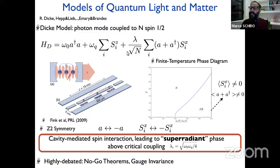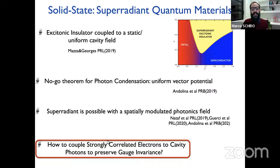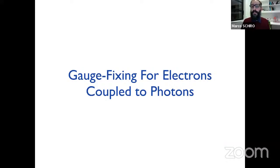Similar efforts to embed electronic degrees of freedom in a cavity to mediate super-radiance in quantum materials have created a lot of interest. It is now understood that for this to happen one needs modulation in the vector potential. Nevertheless, this triggered our interest in understanding how to couple correlated electrons to photons while preserving gauge invariance, which is rather tricky. This is the gauge-fixing problem.